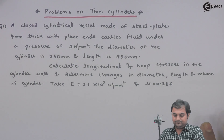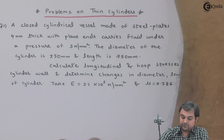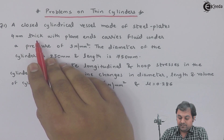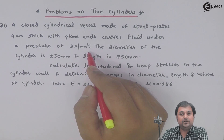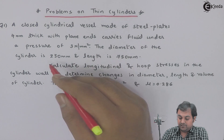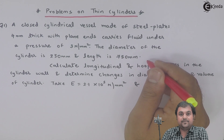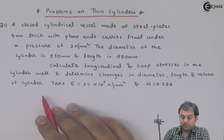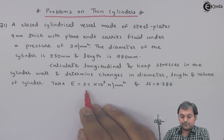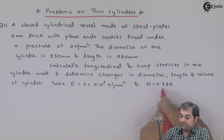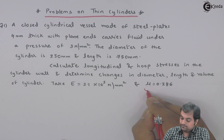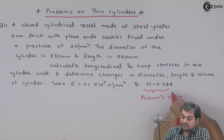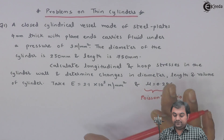The first question under 'Problems on Thin Cylinders': A closed cylindrical vessel made of steel plates 4 mm thick with plain ends carries fluid under a pressure of 3 Newton per mm square. The diameter of the cylinder is 250 mm and length is 750 mm. Calculate longitudinal and hoop stresses in the cylinder wall and determine the changes in diameter, length, and volume. Take Young's modulus = 2.1 × 10⁵ N/mm² and Poisson's ratio mu = 0.286.